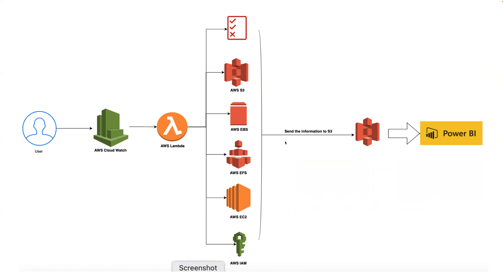The services involved are AWS CloudWatch and AWS Lambda. If a user creates any of these services against your organization's compliance, the Lambda function will auto-remediate, send out notifications, and store the information in an S3 bucket — recording what services were fixed or created out of compliance. You can report this information on Power BI or Tableau.